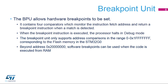The STM32G0 supports four hardware breakpoints used by the debugger to set breakpoints in non-volatile memories. The breakpoint unit only supports address comparisons in the range 0x00000000 to 0x1FFFFFFF, corresponding to the STM32G0's flash memory. Beyond that range, software breakpoints can be used when the code is executed from RAM. When a software breakpoint is used, the debugger replaces the instruction on which the user wants to stop with a dedicated instruction called BKPT.